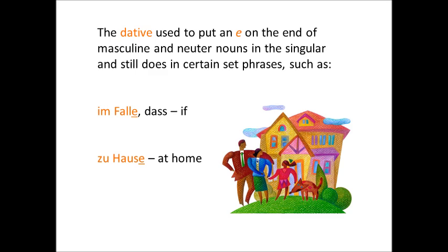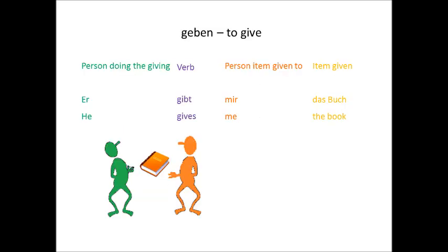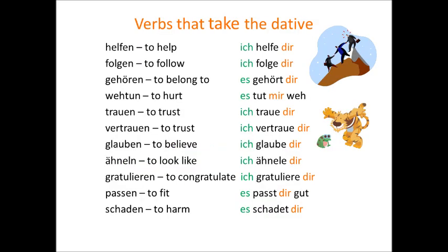So, to sum up: the dative case generally marks the person or thing indirectly impacted by an action. Verbs which take a dative very often also take an accusative — for instance, geben, to give: er gibt mir das Buch, he gives me the book. Typically, the dative covers a sense of doing something to or for someone, and you will quite often see the words to or for in English where German simply uses a dative. However, there are some verbs where the verb simply takes a dative in German, such as helfen, to help, and glauben, to believe, and there's no logic as to why these should be considered an indirect object — it's simply a quirk of the German language.